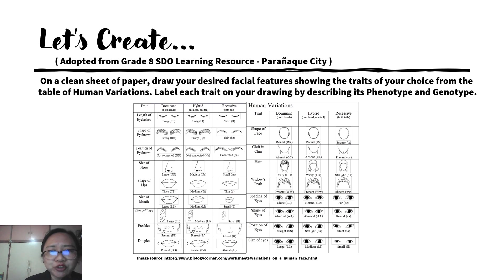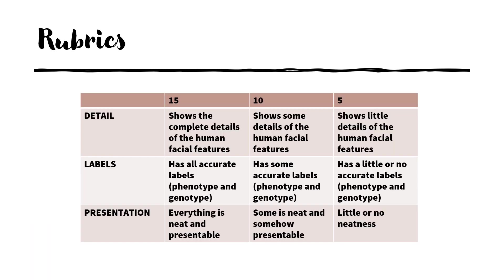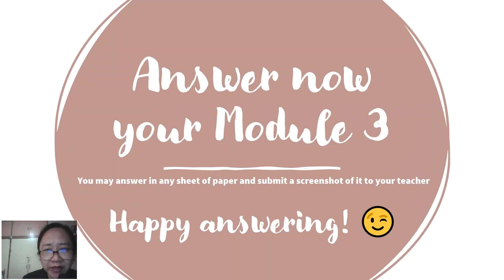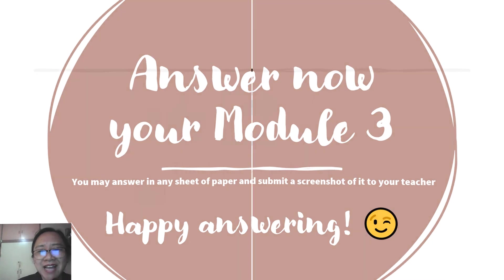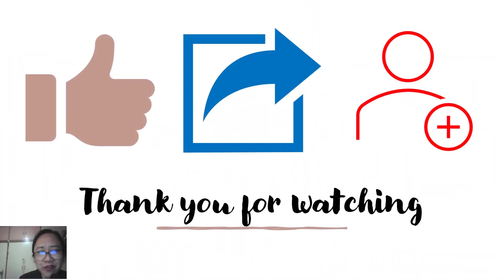Answer also the 'Let's Create' part of your module. On a clean sheet of paper, draw your desired facial features showing the traits of your choice from the table of human variations, and label your drawing by describing its phenotype and genotype. Rubrics: Detail — 15 points, Label — 15 points, Presentation — 15 points, for a total of 45 points. Answer Module 3 and submit a screenshot to your teacher. Happy answering! Thank you for watching — don't forget to click like, share, and subscribe.